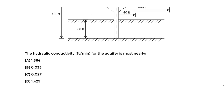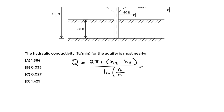We're using the Thiem equation. The equation from the FE handbook is: Q equals 2π times T, times (H2 minus H1), divided by the natural log of R2 over R1. We're solving for hydraulic conductivity, but it doesn't appear directly in this equation, so we need to look at how the variables are defined in the handbook.